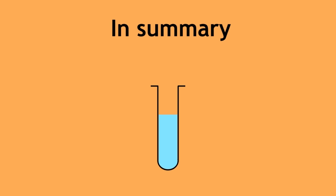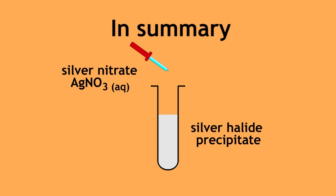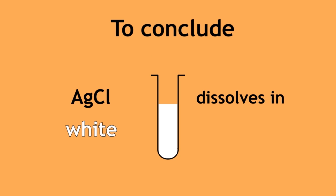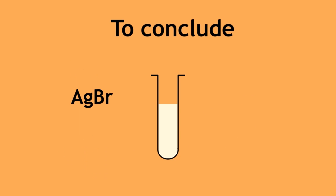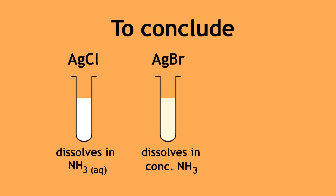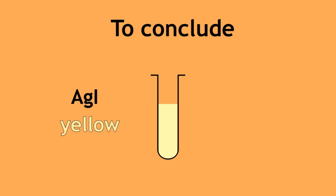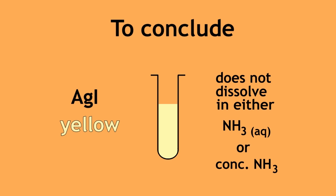Halide ions can be detected through the addition of aqueous silver nitrate, which forms a silver halide precipitate. To conclude, silver chloride is white and dissolves in dilute aqueous ammonia. Silver bromide is cream and only dissolves in concentrated ammonia. Silver iodide is yellow and does not dissolve in either dilute or concentrated ammonia.